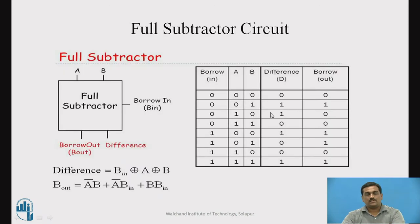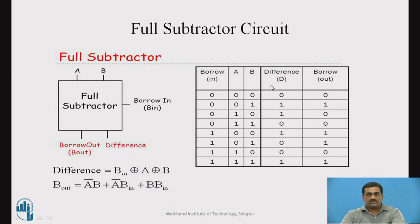The next circuit we are going to implement is the full subtractor circuit. This is the block diagram: it is a combinational circuit with three inputs and two outputs that performs subtraction of three bits. The inputs are A, B, and the borrow input BIn, and the outputs are BOut (borrow output) and the difference bit. From the truth table, the difference comes out to be BIn XOR A XOR B, whereas BOut equals A-bar·B + A-bar·BIn + B·BIn.